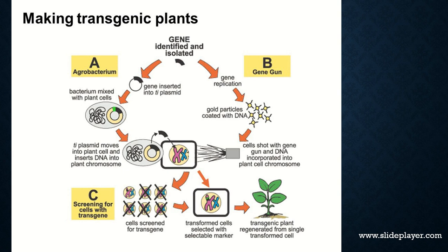The Ti plasmid moves into the plant cell and inserts itself into the plant DNA. To confirm whether it has been inserted, the cells are screened for the transgene. The transformed cells are selected using a selectable marker. These transformed cells ultimately give rise to the transgenic plant, regenerating from a single transformed cell.